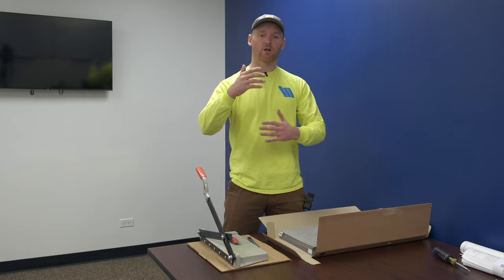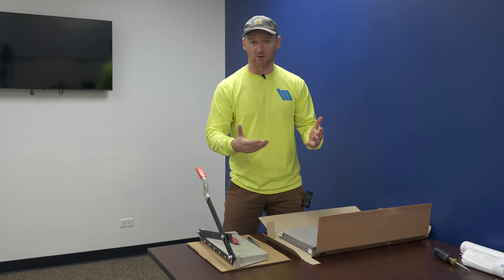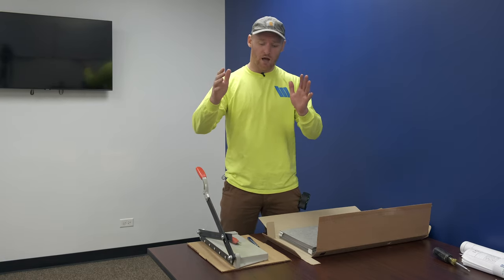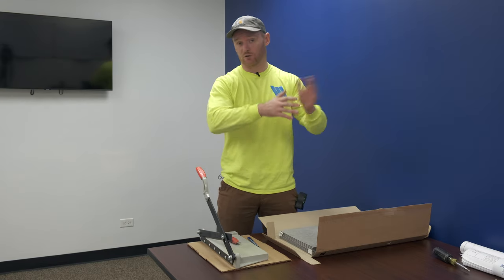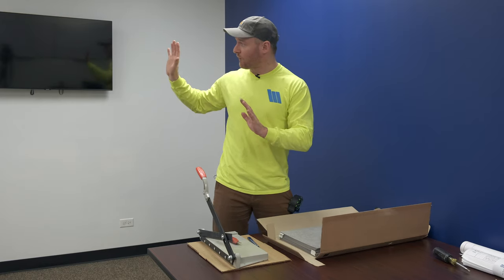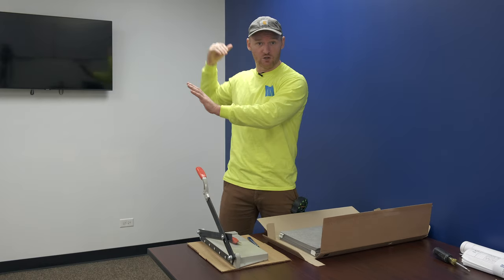So we've got our measurements, and we know our pattern that we want to use, a running bond. So I'm going to go ahead and cut this at eight inches, which will leave me 16 left for the field for the farther corners, and then to use as a starter piece on the next row.